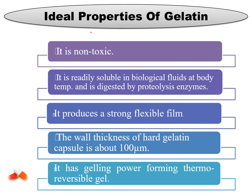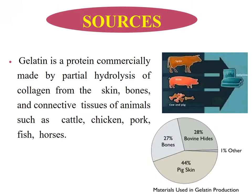Next, what are the ideal properties of gelatin? It should always be non-toxic. It should be readily soluble in biological fluid at body temperature. It should produce a strong, flexible film — the wall thickness of a hard gelatin capsule should be about 100 micrometers. It has gelling power, forming a thermo-reversible gel.